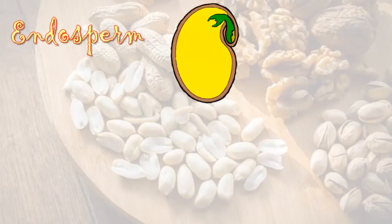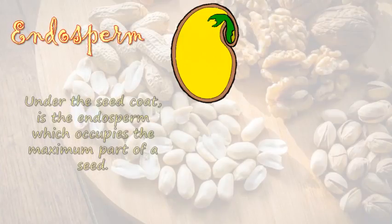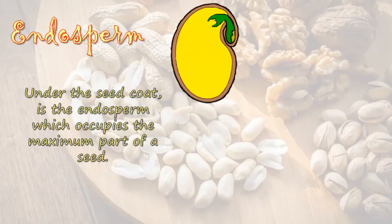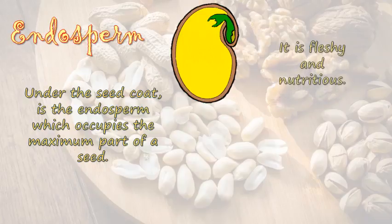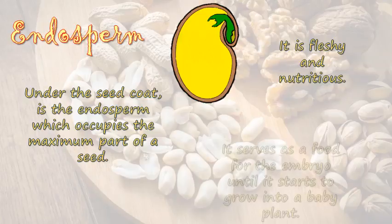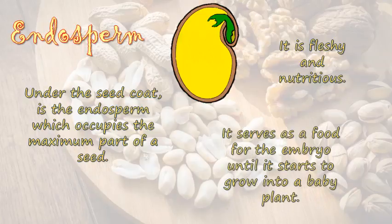Endosperm. Under the seed coat is the endosperm, which occupies the maximum part of a seed. It is fleshy and nutritious. It serves as a food source for the embryo until it starts to grow into a baby plant.